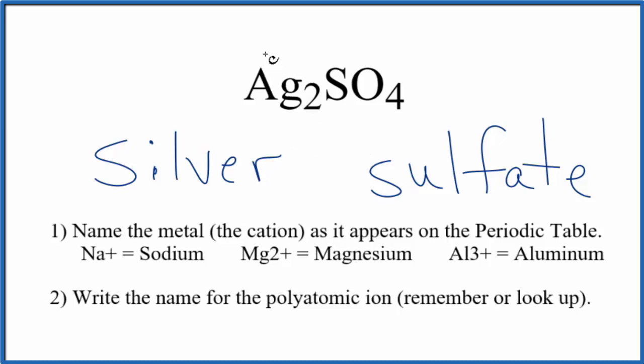Silver is a transition metal, but it has a 1 plus ionic charge. So we don't really need to write anything here like Roman numerals for silver sulfate.